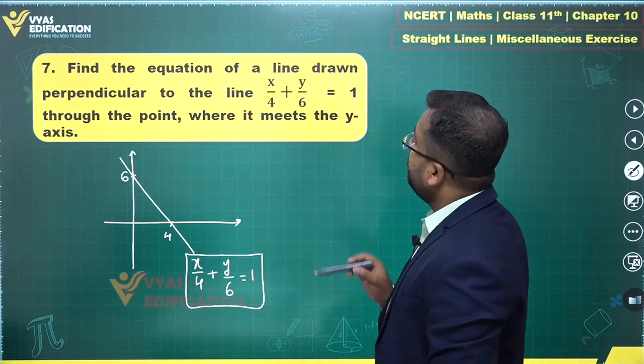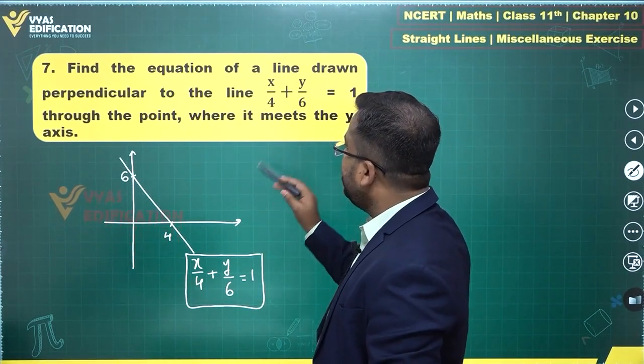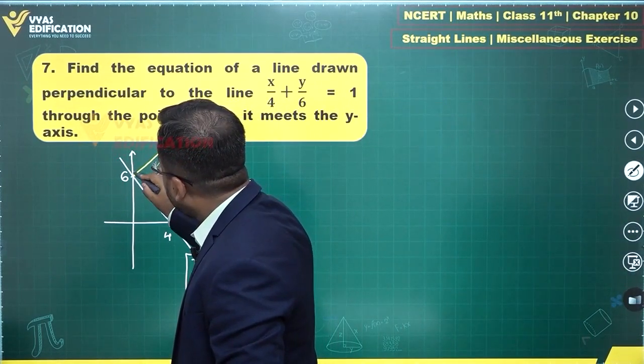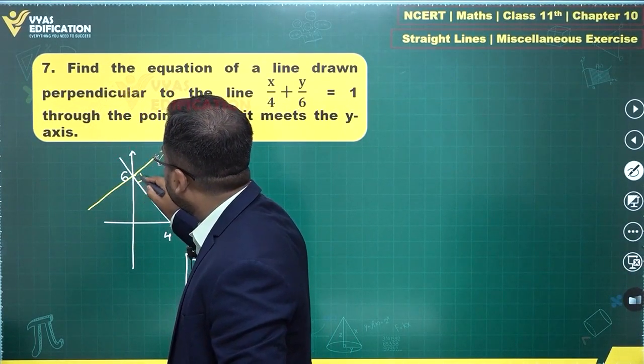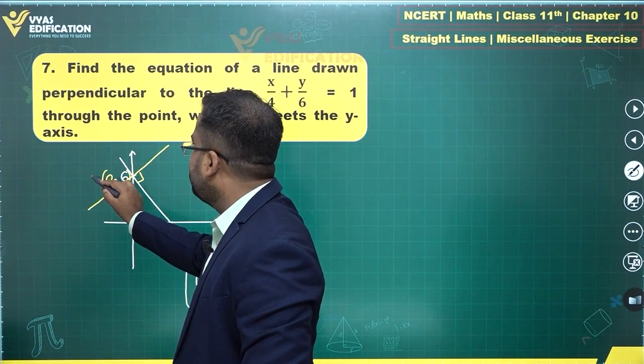Now find the equation of a line drawn perpendicular to the line through the point where it meets the y-axis. Which line are we looking for? We are looking for this particular line which is perpendicular to this line at this particular point. This particular point is (0, 6).